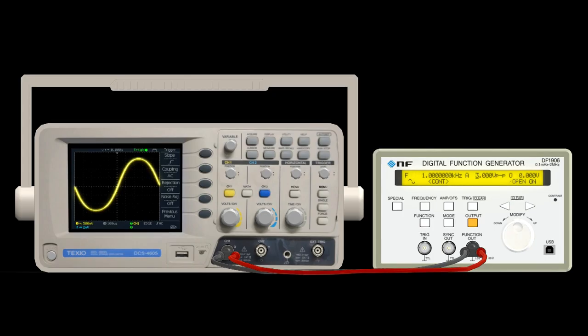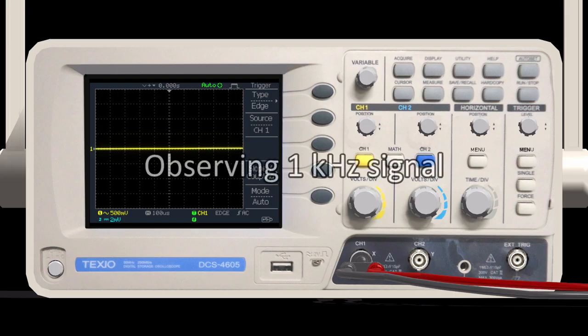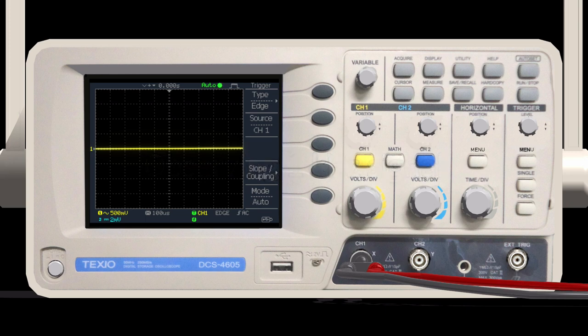Now, let's output a 1 kHz sine wave signal from the oscillator and display it on the oscilloscope. The first step in preparing the oscilloscope is to set up the trigger. First, press the trigger menu button to set the trigger.